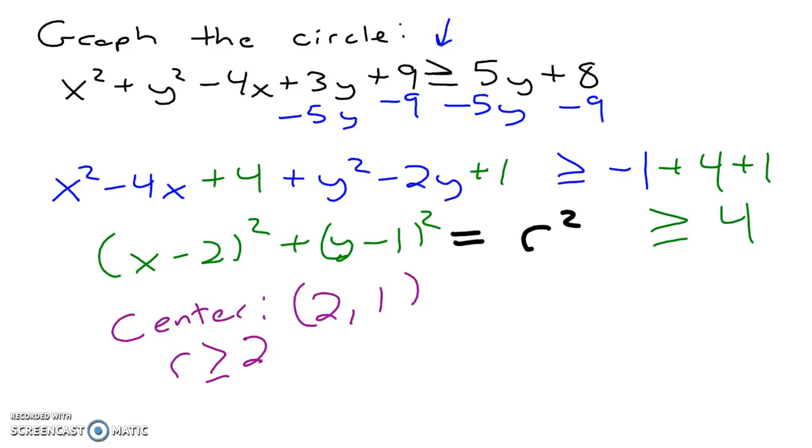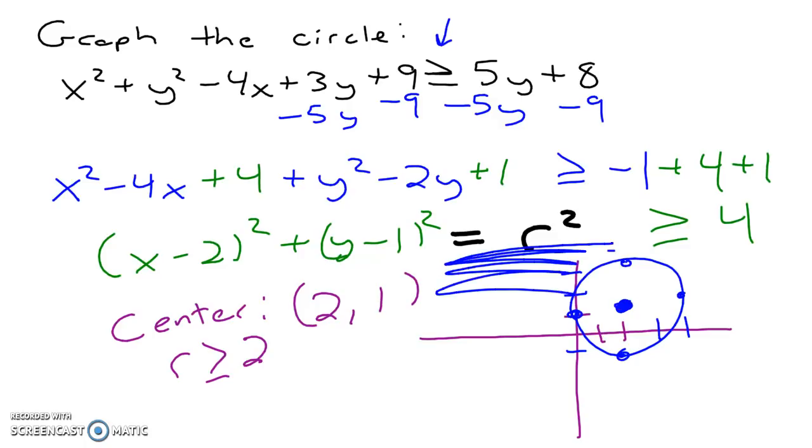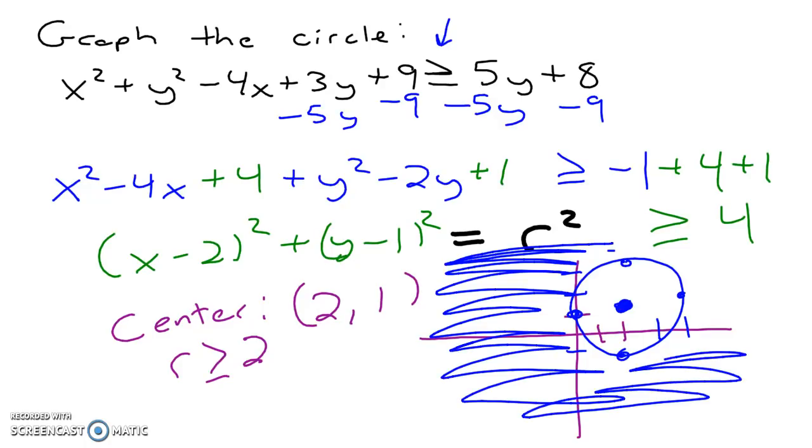That means when we go to graph this, we are centered at 2, 1. Our radius doesn't just equal 2. Since it's greater than or equal to 2, we can go ahead and show the solid line representing the circle itself. But our radius is everything bigger than 2. That means the distance is greater than 2 away from this center. That portion is going to demonstrate with shading. All of these portions out here have distances from the center being greater than 2.